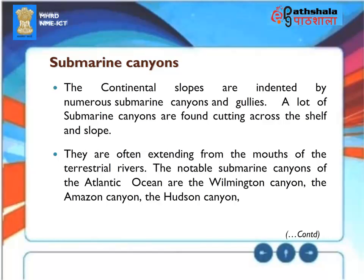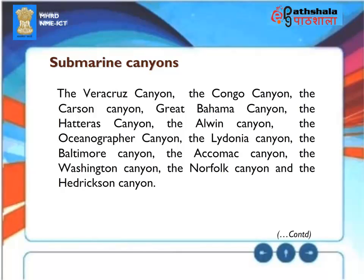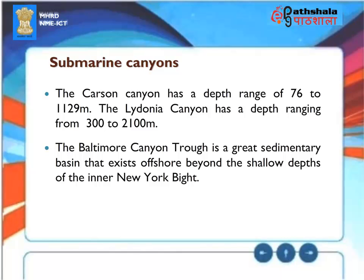Submarine Canyons: The continental slopes are indented by numerous submarine canyons and gullies, often extending from the mouths of terrestrial rivers. Notable submarine canyons of the Atlantic Ocean include the Wilmington Canyon, Amazon Canyon, Hudson Canyon, Veracruz Canyon, Congo Canyon, Carson Canyon, Great Bahama Canyon, Hatteras Canyon, Alwyn Canyon, Oceanographer Canyon, Ledonia Canyon, Baltimore Canyon, Accomack Canyon, Washington Canyon, Norfolk Canyon, and the Hendrickson Canyon. The Baltimore Canyon Trough is a great sedimentary basin offshore beyond the shallow depths of the inner New York Bight.